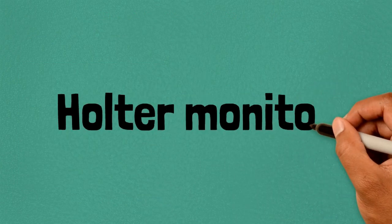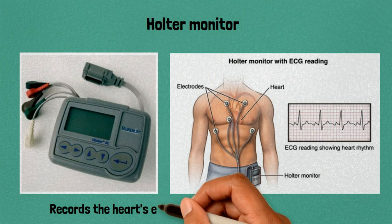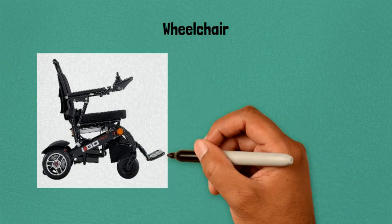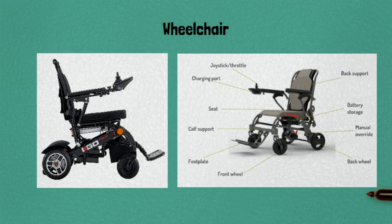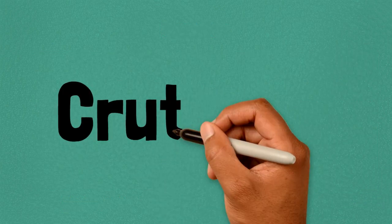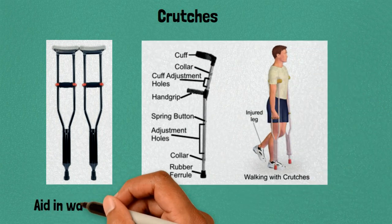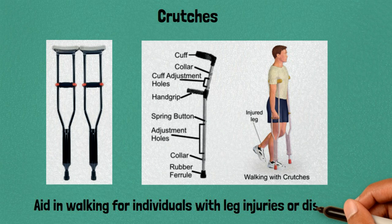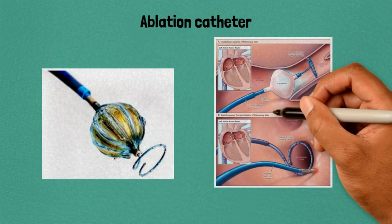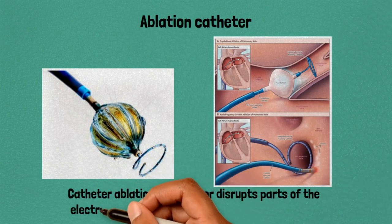Twenty-six: Holter monitor, records the heart's electrical activity over a period of time. Twenty-seven: wheelchair, assists individuals with mobility limitations. Twenty-eight: crutches, aid in walking for individuals with leg injuries or disabilities. Twenty-nine: ablation catheter — catheter ablation destroys or disrupts parts of the electrical pathways causing arrhythmias.